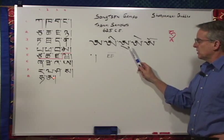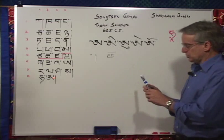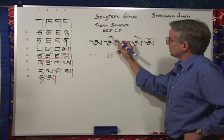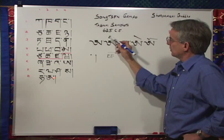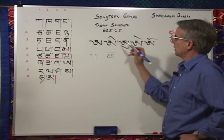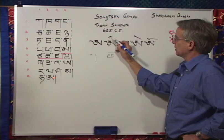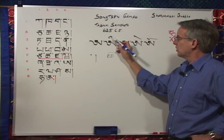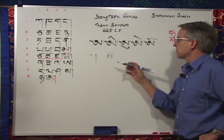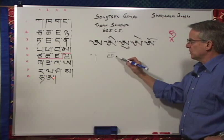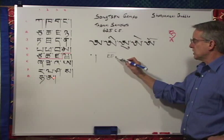About the first vowel sign: the gi-gu is made by making a counter-clockwise hook first, lifting the pen, and then going back and making a stroke that goes from thick to thin, top right to bottom left. The gi-gu then gives us the ee sound.